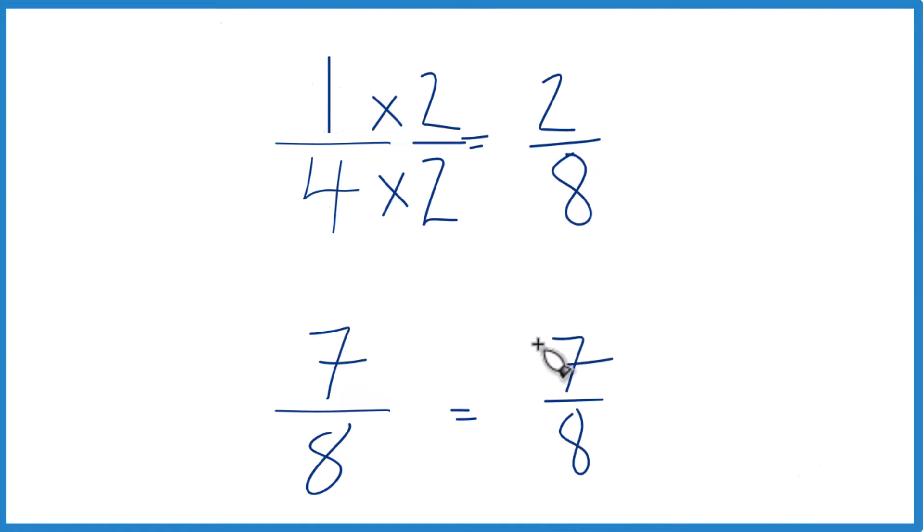7 is greater than 2, 7/8, that's greater than 2/8. It's 5/8 greater. So there you have it, 7/8 is greater than 2/8. And since these are equivalent, 7/8 is also greater than 1/4.